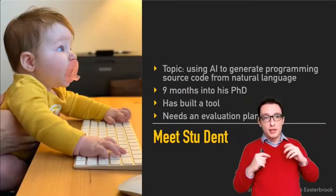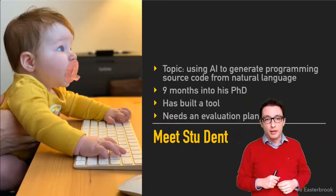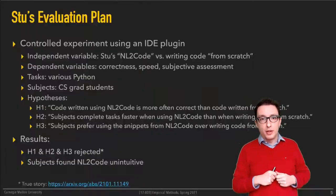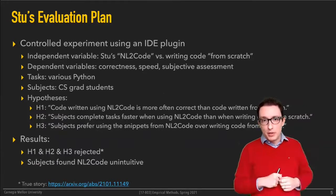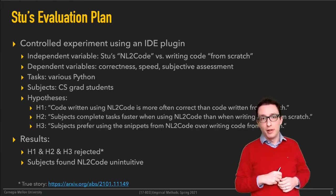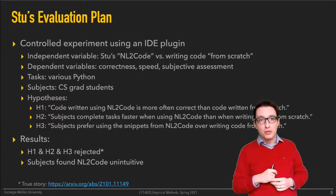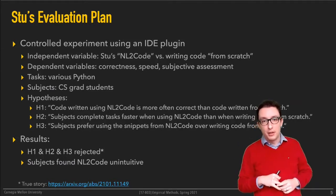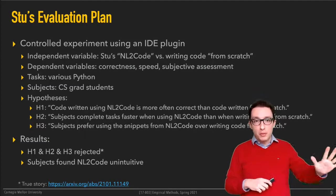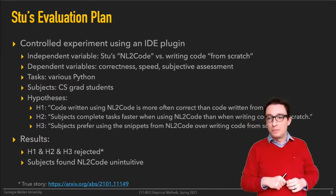The thing I started with on Tuesday was this example of Stew, who built a tool and designed an evaluation study. Some of Stew's findings were maybe a little surprising — he was unable to confirm any of the hypotheses he set out with. People's programs weren't more correct when they used his tool, they didn't complete tasks faster, and they didn't prefer using his tool — they found it unintuitive.